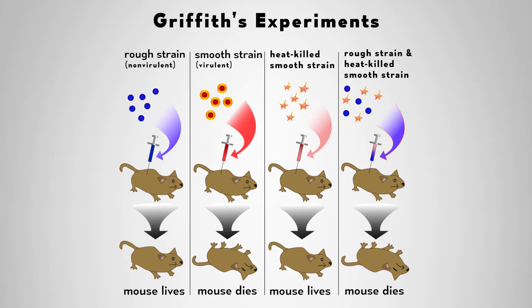So essentially this strain of bacteria was non-virulent — it does not cause disease. He was also looking at another strain of bacteria with a smooth texture, which he called the smooth strain or the S strain. When the S strain of bacteria is injected into mice the mice die of pneumonia, so the S strain of bacteria is virulent and produces disease.